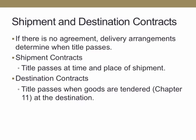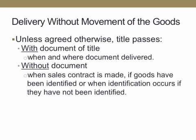Shipment and destination contracts. If there is an agreement about delivery, then delivery arrangements determine when the title passes. In a shipment contract, title passes at the time and place of shipment. In a destination contract, title passes when the goods are tendered at the place of their destination. You could also have delivery without movement of the goods — title passes from one party to the other. With a document of title, it passes when the document is delivered. Without it, when the sales contract is made if the goods have been identified, or when identification occurs if they haven't been identified.